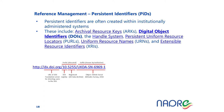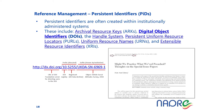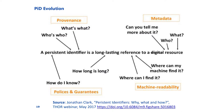You may already be familiar with DOIs because many scientific publications have DOIs, and DOIs can be used to uniquely cite and reference a particular publication. A persistent identifier is a long-lasting reference — initially to a digital resource, but in PID evolution we can now issue PIDs to any kind of resource. You can see the different aspects of a PID: provenance, metadata, machine readability, policies, and guarantees. You can discover more about PIDs in the references cited at the bottom of the slide.